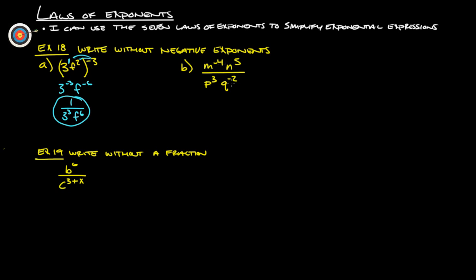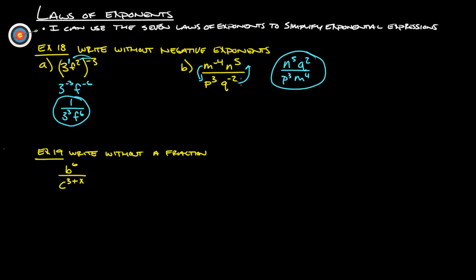m to the 4th, n to the 5th, p cubed, q to the negative 2nd. We don't have any similar bases so we can't combine any of these. We move m to the negative 4th down to the bottom and q to the negative 2nd up to the top. So we leave n to the 5th on top, q to the positive 2nd comes up, p cubed stays on the bottom, and m to the negative 4th becomes m to the positive 4th on the bottom.